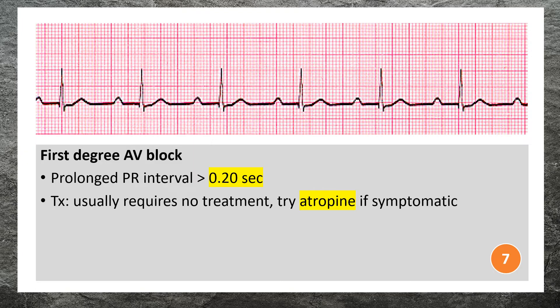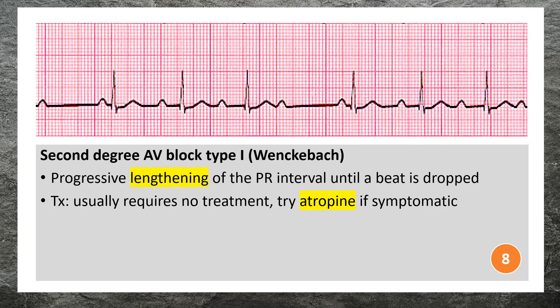First degree AV block usually requires no treatment; atropine may be indicated when symptomatic. Second degree AV block Type 1 (Wenckebach) is characterized by a progressive lengthening of the PR interval until a beat is dropped.